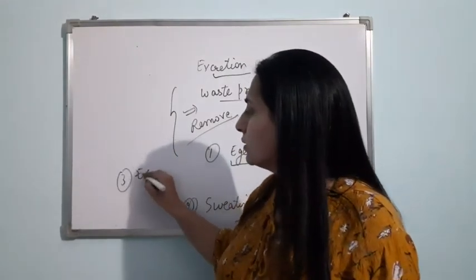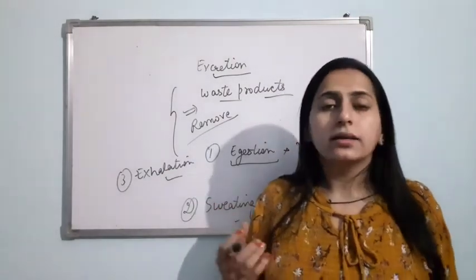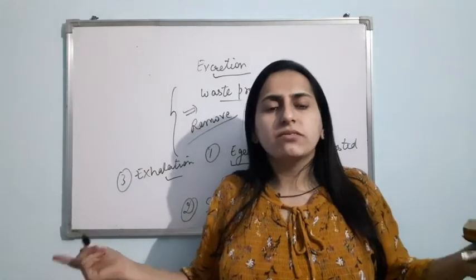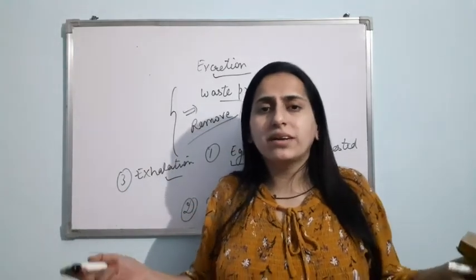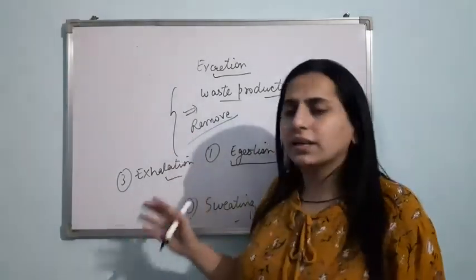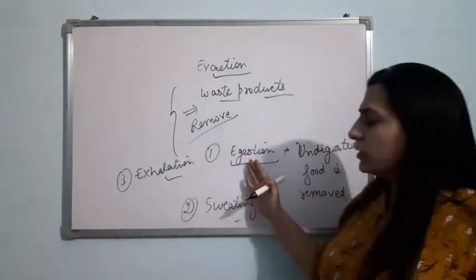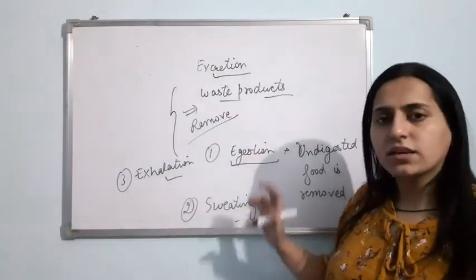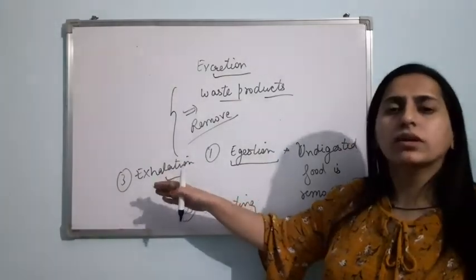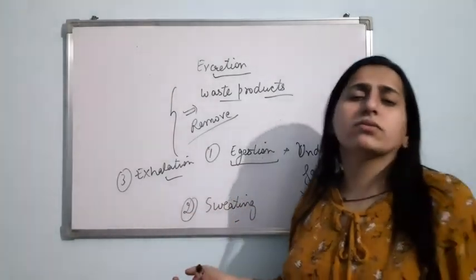Then there is exhalation. In the previous chapter, chapter 10, we studied that we exhale CO₂. CO₂ is a waste product for our body — our body doesn't need it — so we remove it through exhalation. So we are removing undigested food, unwanted salts and water through sweat, and CO₂ through exhalation. These are all different kinds of excretion — different methods by which we remove waste products.